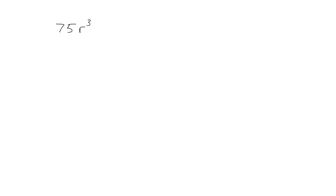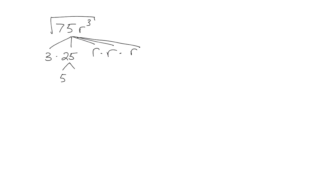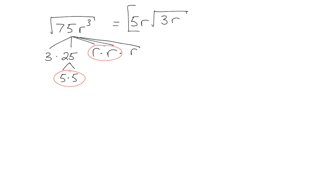Let's do one more: √(75r³). 75 is 3 times 25, and r³ is r times r times r. The 25 can be written as 5 times 5. We've gone as far down as we can in the tree. Circle pairs: a pair of 5s and a pair of r's. The 3 is orphaned and one r is also orphaned. Pull out a single 5 and a single r, giving 5r. Under the radical goes everything left: 3 times the single remaining r, which is 3r. The answer is 5r√(3r).